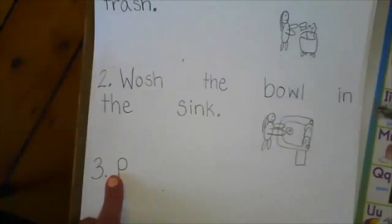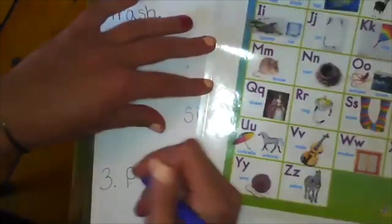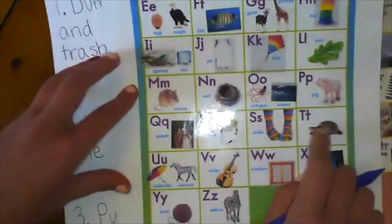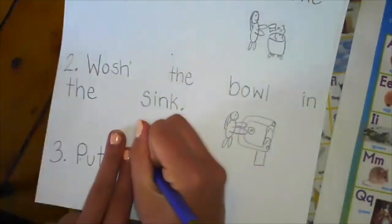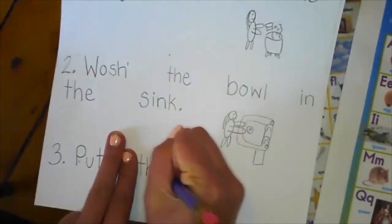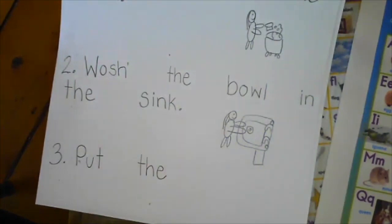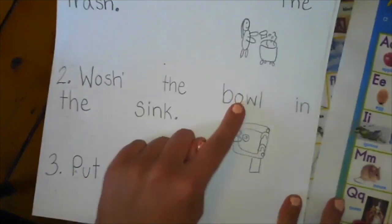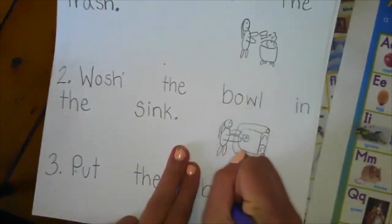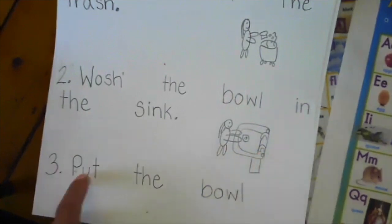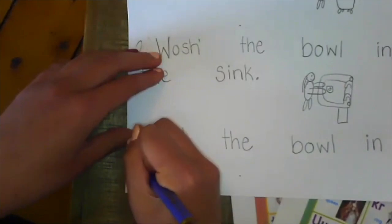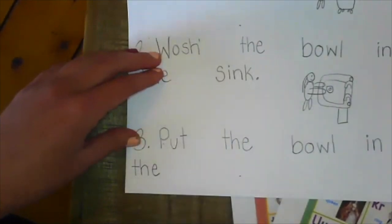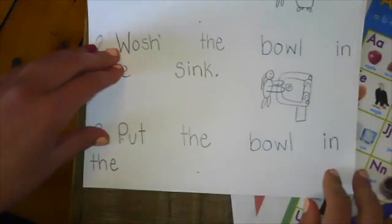See, all of these start with one uppercase letter and then all lowercase letters for the whole sentence. Uppercase letter, all lowercase letters for the whole sentence and a period at the end. Put, p-u-u-u-umbrella. Put, t-t-turtle. Put the, sight word, t-h-e spells the. Put the bowl. Oh, I already learned how to spell bowl right there. B-o-w-l. Put the bowl in. I-n spells in. In the. T-h-e spells the. In the blue recycling bin.